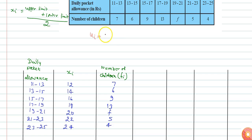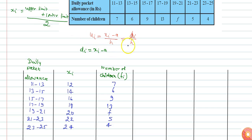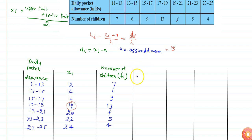ui is given by Xi minus a divided by h, or Di divided by h. Di is the deviation from a, where a is the assumed mean, which can be chosen as any value of Xi. Here I am choosing the assumed mean a to be 18.